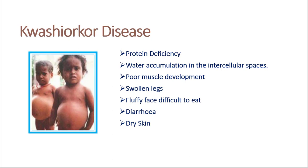Let us see examples for these cases. The first one is Kwashiorkor disease. This disease occurs especially in children — malnutrition symptoms appear especially in children. If elders do not take balanced diet for days, they do not show symptoms and can recover after a few days. But children show malnutrition symptoms if they are not given sufficient nutritious diet. Kwashiorkor is the disease caused by protein deficiency.